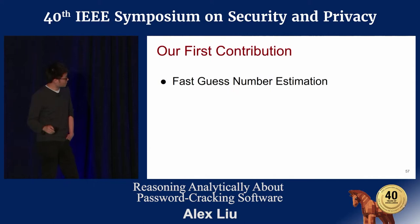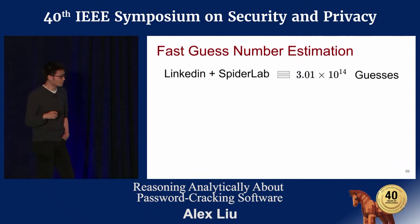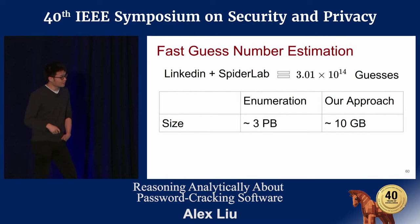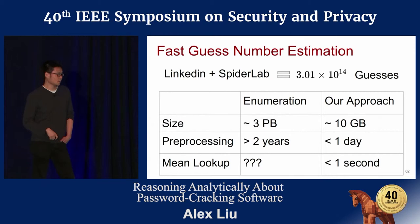With these new tools, we enabled fast guess number estimation. We benchmarked our performance on real data using the LinkedIn password dump as our wordlist and the rules from Spider Lab. Together they issue 3×10^14 guesses. Enumerating everything and saving to disk would take three petabytes of data and more than two years — we only need 10 gigs of space and less than a day of preprocessing. After one-time preprocessing, we estimate the guess number in less than a second.